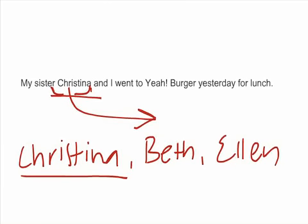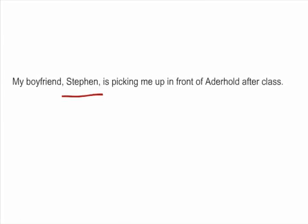'My sister and I went to Yaburger yesterday for lunch.' — Well, which sister? I only went with one. This could mean Beth and I, Ellen and I, or Christina and I went to Yaburger. But I want specifically for you to understand that I went with Christina. So we would not use commas to set it off because it is essential — it's not something that can be just popped in and out of the sentence.